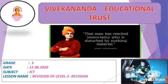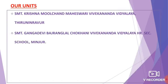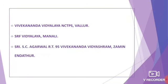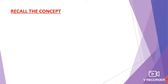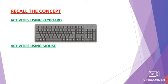So what is the lesson we are learning in ICT map? Revision of level 2. So we are revising the lesson. Before moving to today's concept, we are going to recall the concept very quickly. So what are all the things we learnt? Activities using keyboard and activities using mouse.